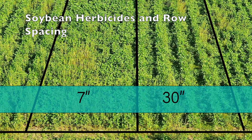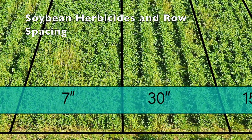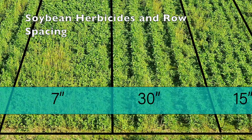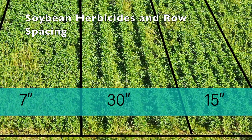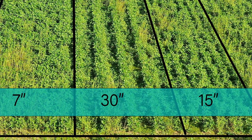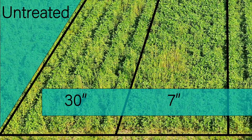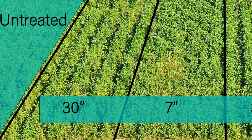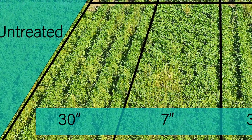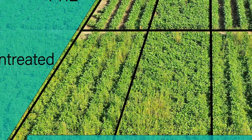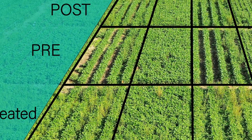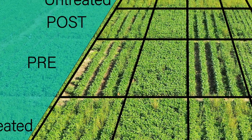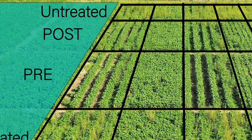In this demonstration, soybeans were planted on 30, 15, or 7-inch row spacings. For each of these row spacings, there were four weed control treatments: no herbicides, a pre-emergence herbicide applied at planting, an early post-emergence herbicide application, or both a pre-emergence followed by a post-emergence application.